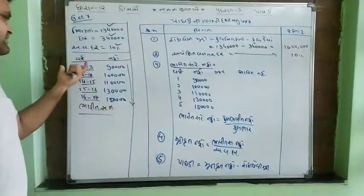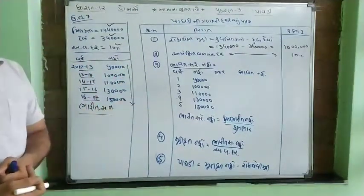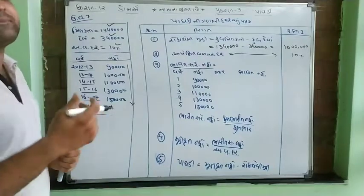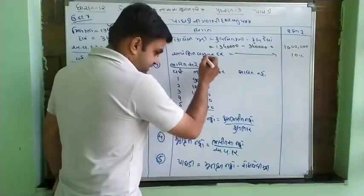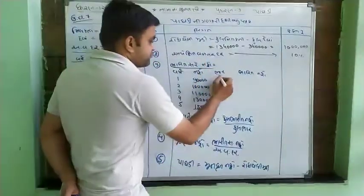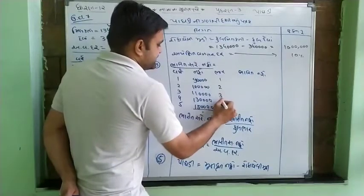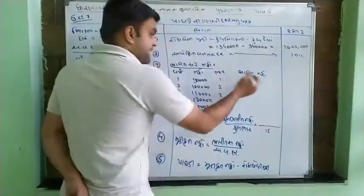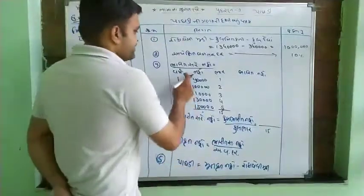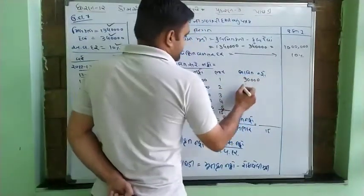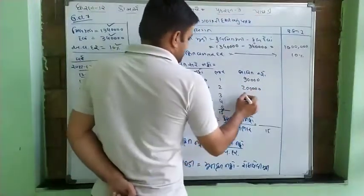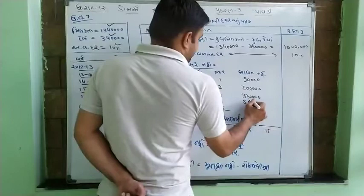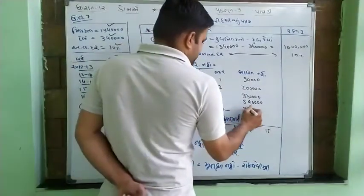અપેક્ષિત વળતરનું કોષ્ટક — વરસ બો — જ્યા લેખા-નોંધ, તમે વર્ષ આ લખો. પંદર ભારીત. લખ્કો આવે — ગુણાકાર કરવાનો છે. નેવ્વો હજાર ગુણ્યા એક — એક લાખ. ગુણ્યા ડી — એટ્લે દે — દે લાખ. એક લાખ ઘસ હજાર ગુણ્યા ત્રણ — ત્રણ લાખ ત્રીસ હજાર.